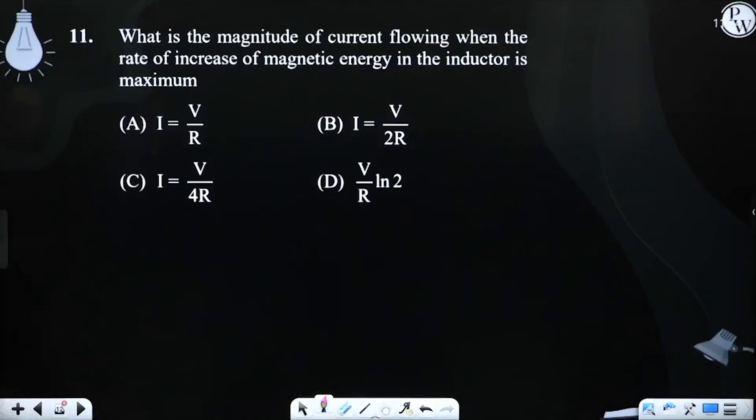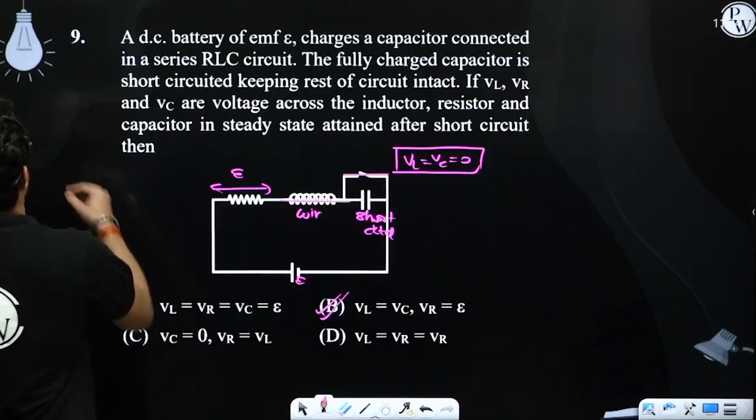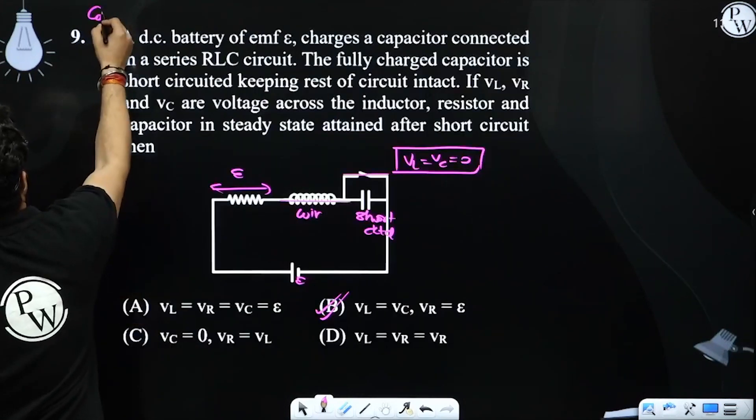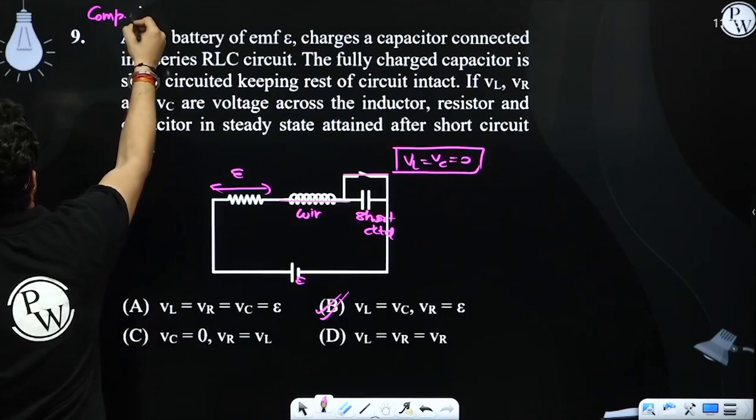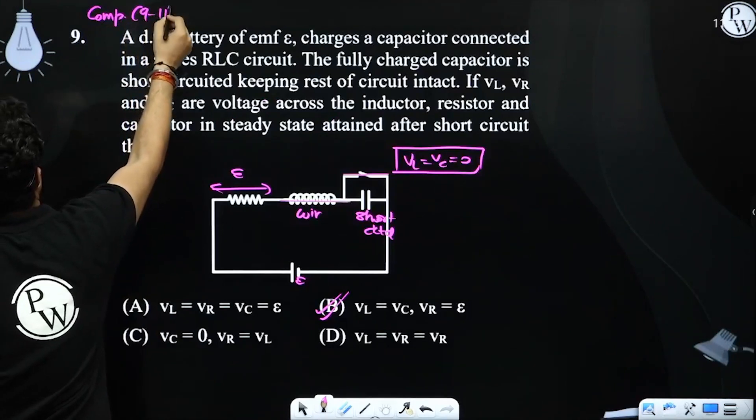Next is what is the magnitude of current flowing when the rate of increase of magnetic energy... This is not related to the same thing. Questions 9, 10, 11. Comprehension is written here. This is comprehension, questions 9 to 11.